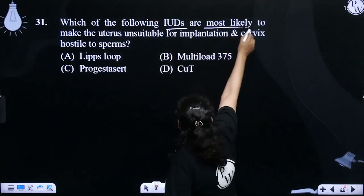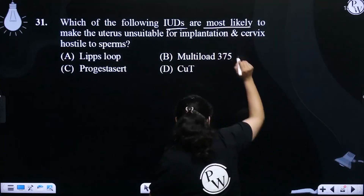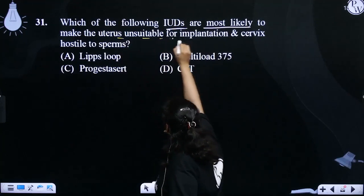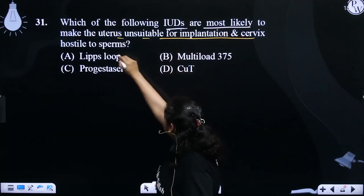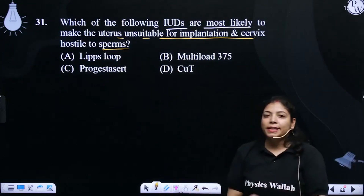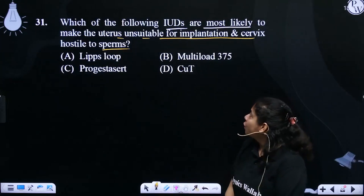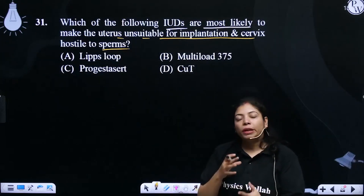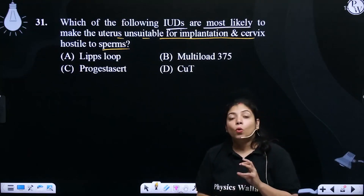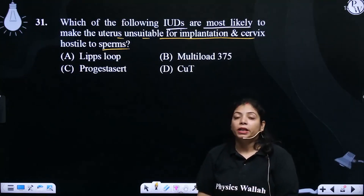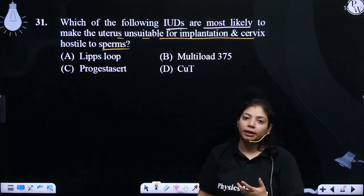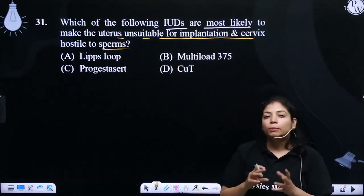Which of the following IUDs are most likely to make the uterus unsuitable for implantation and the cervix hostile to sperm? The cervix also makes it a hostile environment.